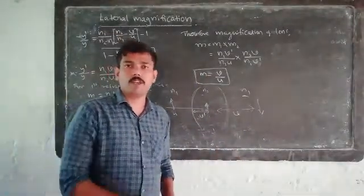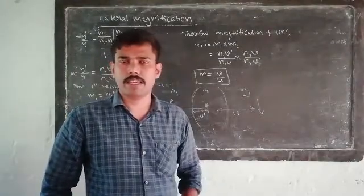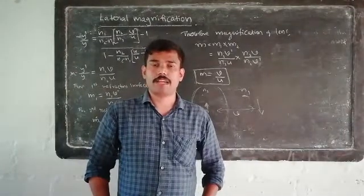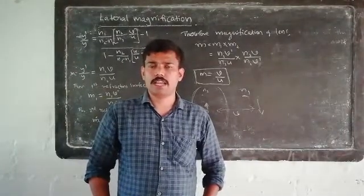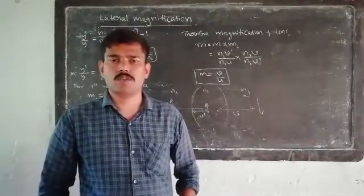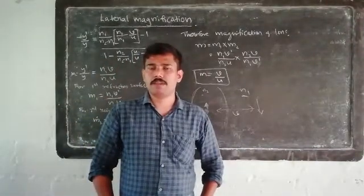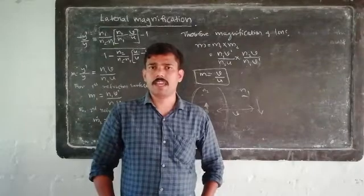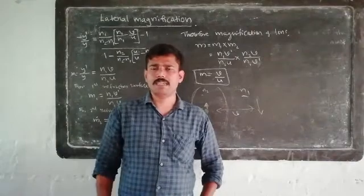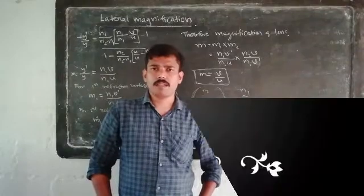That is why we take the lateral magnification M is equal to V by U. In this class, Newton's formula and the lateral magnification have been discussed. If you have any problems, we will take a look at the formula. Thank you.